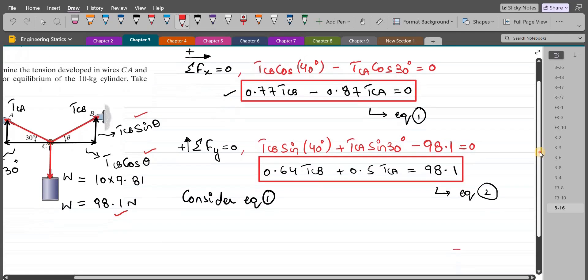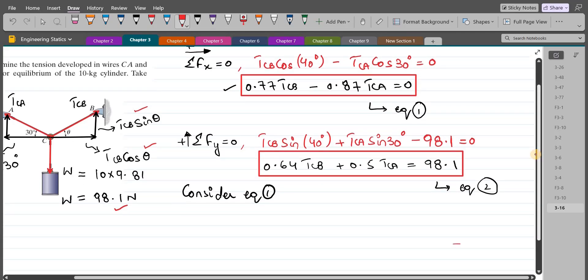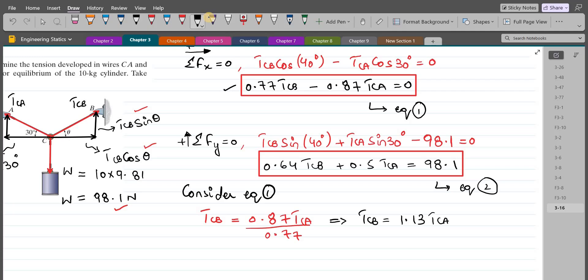And from equation one, if I make TCB the subject, then I would have TCB equals 0.87 TCA divided by 0.77. So from here, TCB equals 1.13 TCA. Let's call this equation three.